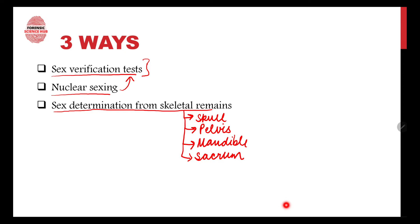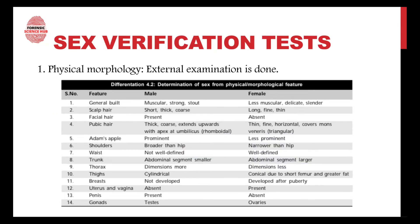Let's start with the sex verification test. We examine the person's physical morphology — how the person looks physically. We examine external characteristics. For example, first we look at the general build of the body. If it is muscular, strong, and stout, then it is a male. Females are less muscular, more delicate and slender.